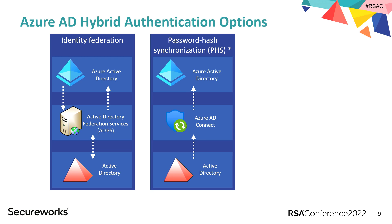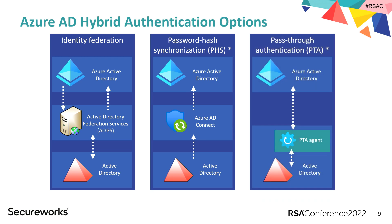Then came password hash synchronization, where you synchronize hashes from your on-prem AD to the cloud. They're not the plain NT hashes — they are rehashed using SHA-256 a thousand times with a salt, so they can't be reversed. Azure AD checks credentials against those synchronized hashes. But this doesn't support single sign-on. The third option is Pass-Through Authentication, or PTA, where you install an agent on-prem that connects to Azure AD. When users try to log in, credentials are sent to that agent, the agent tries to log in as that user, and returns the result. Passwords are not stored in Azure AD with PTA.